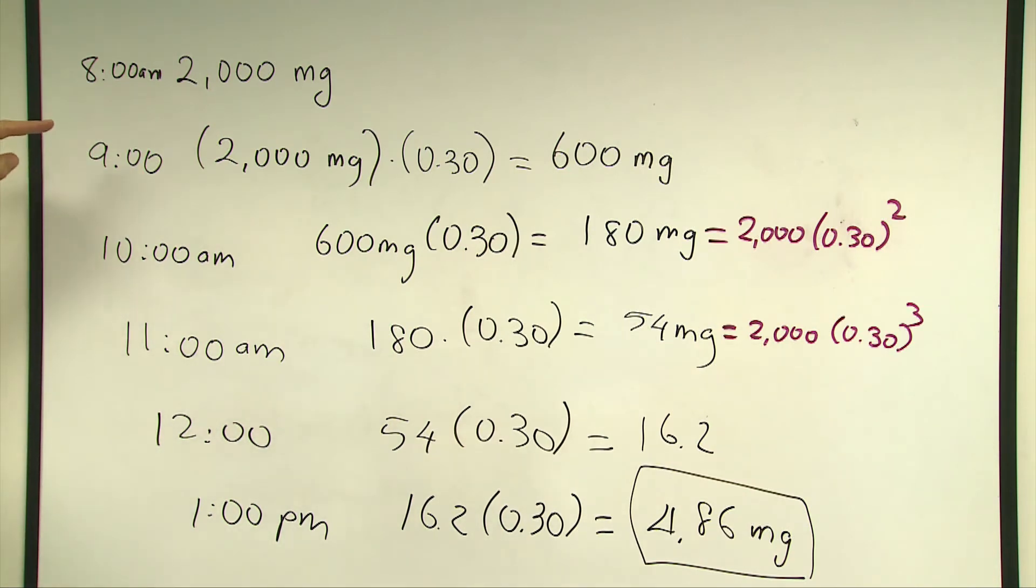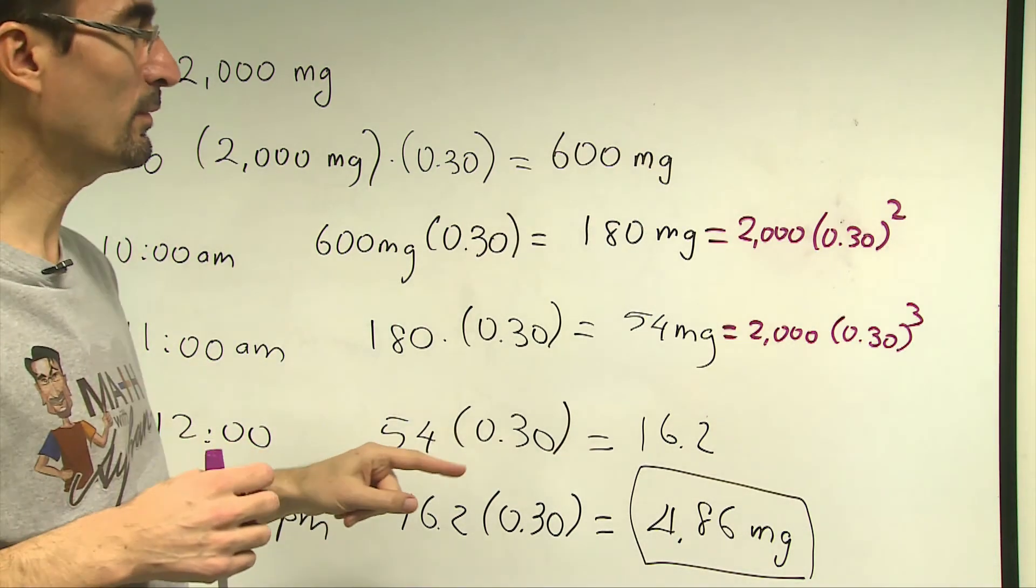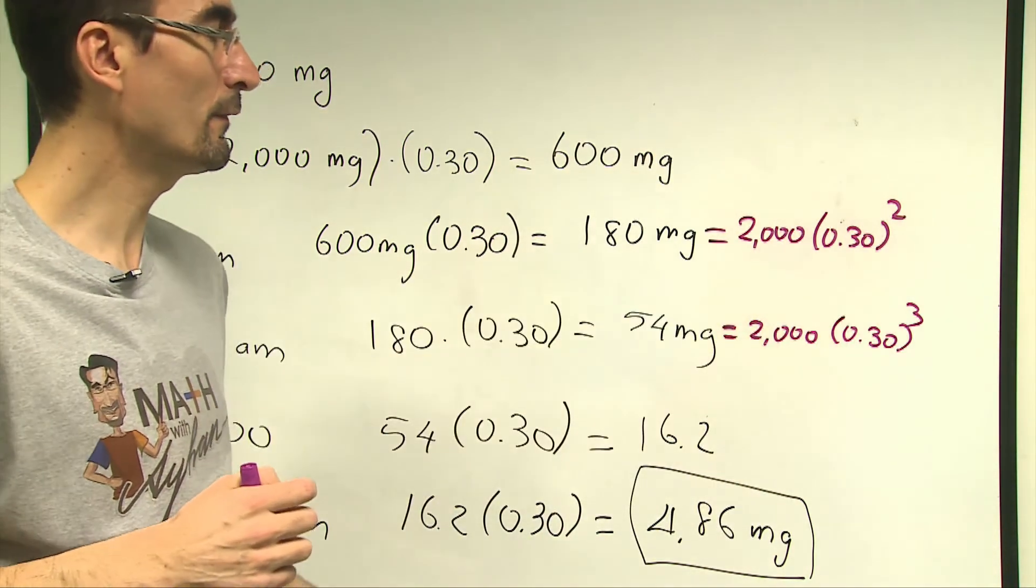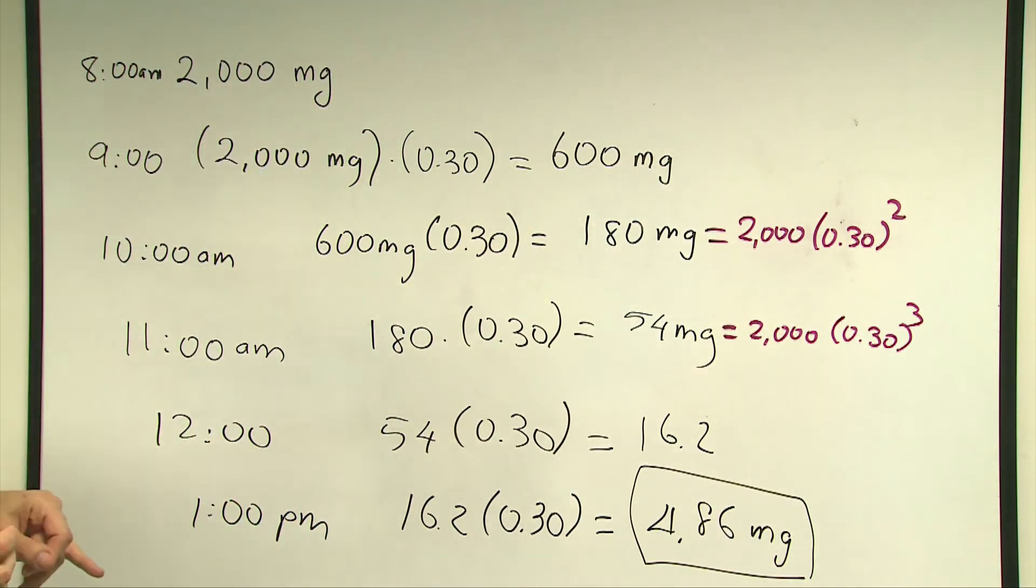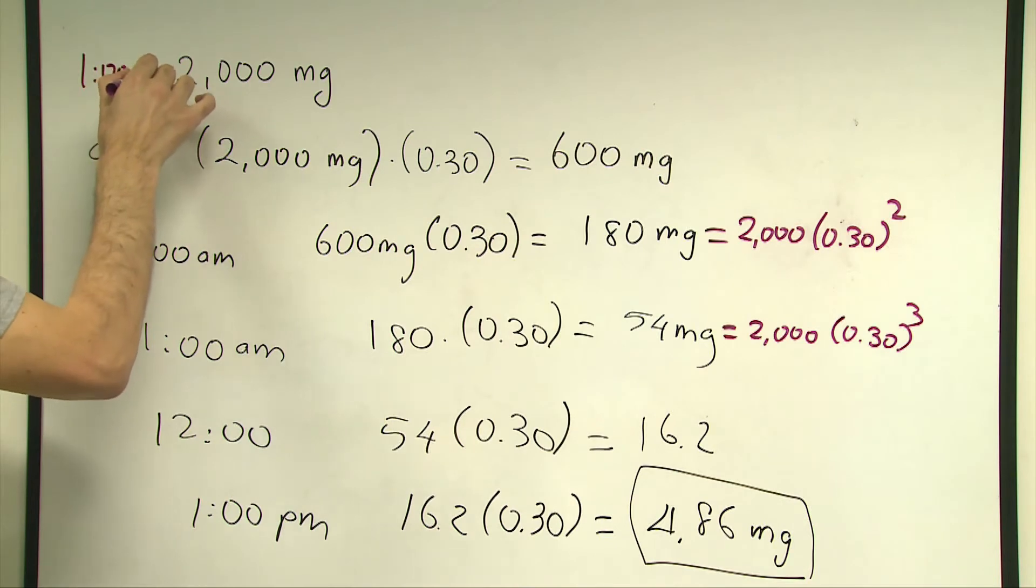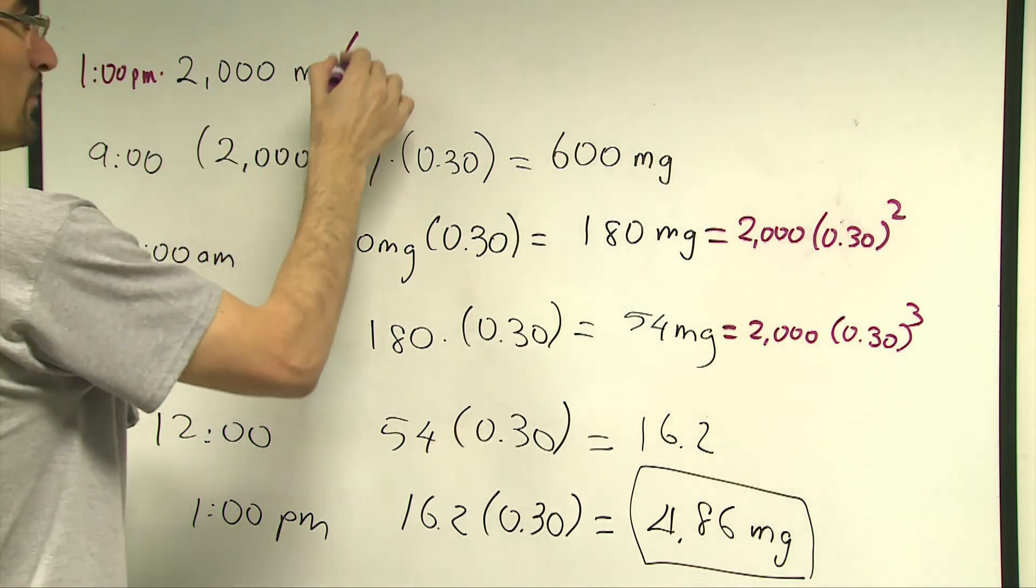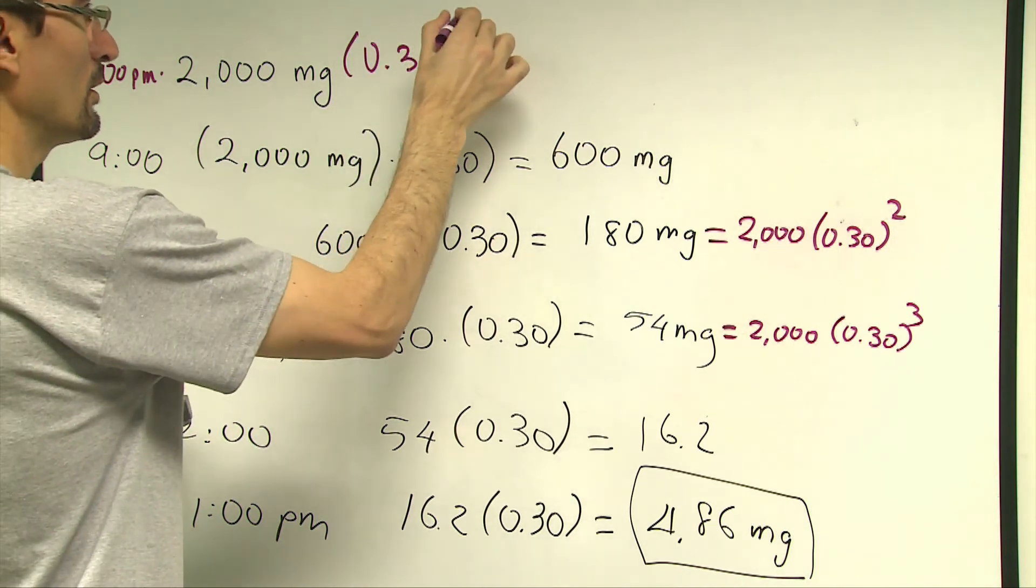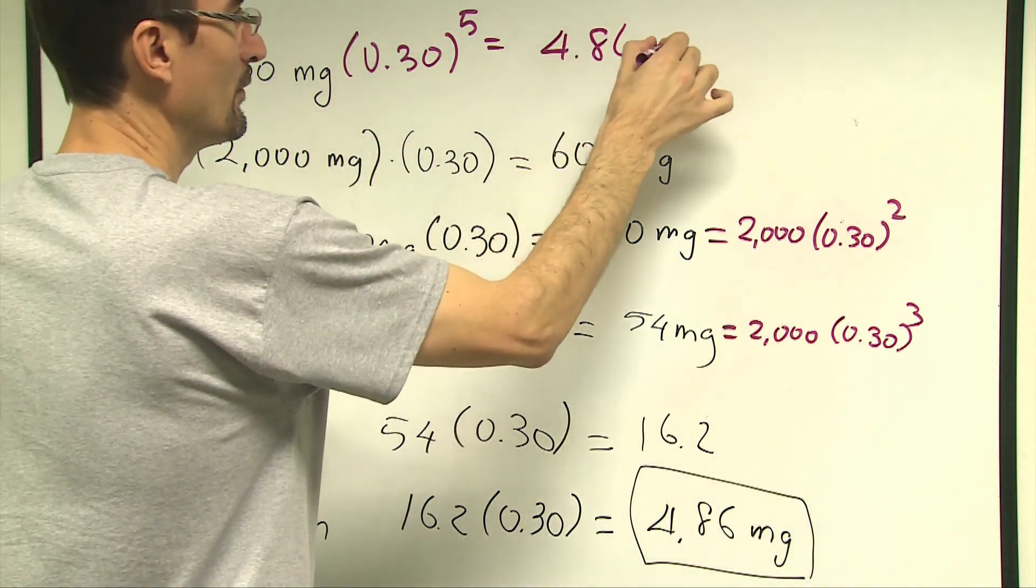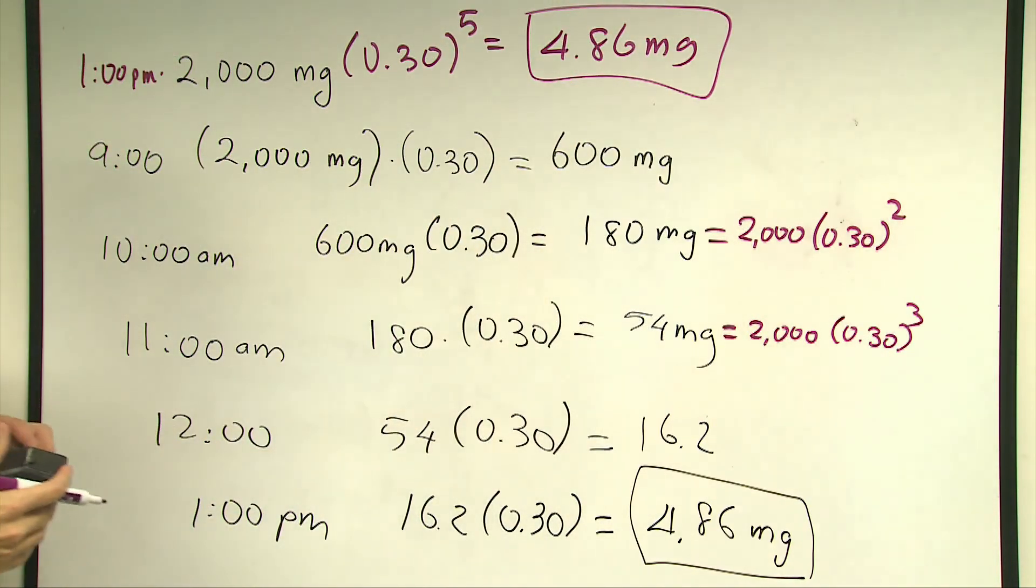Following the same pattern, 3 hours from 8 a.m., that's going to be 2,000 mg multiplied by 0.30 raised to the third power. So, following the same pattern, when I get to 1 p.m., 5 hours after 8, what's going to remain in the patient's body will be 2,000 mg, the initial value, multiplied by 0.30 to the fifth power, which will give us 4.86 mg eventually, as you see, which is considerably less than the initial amount.